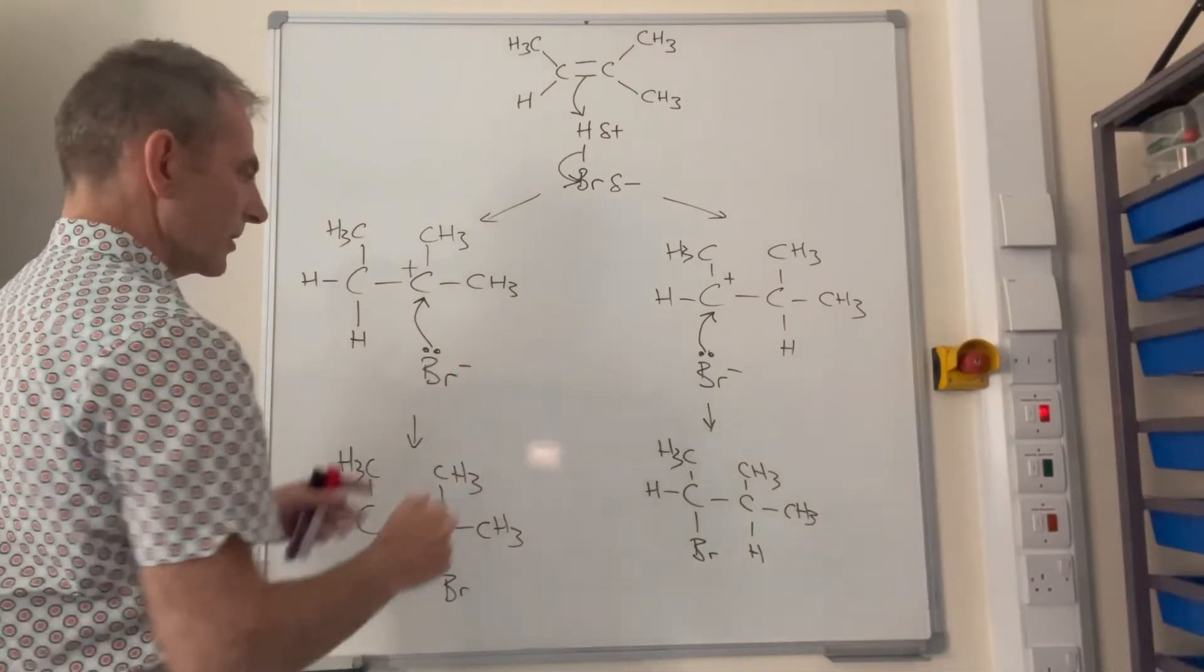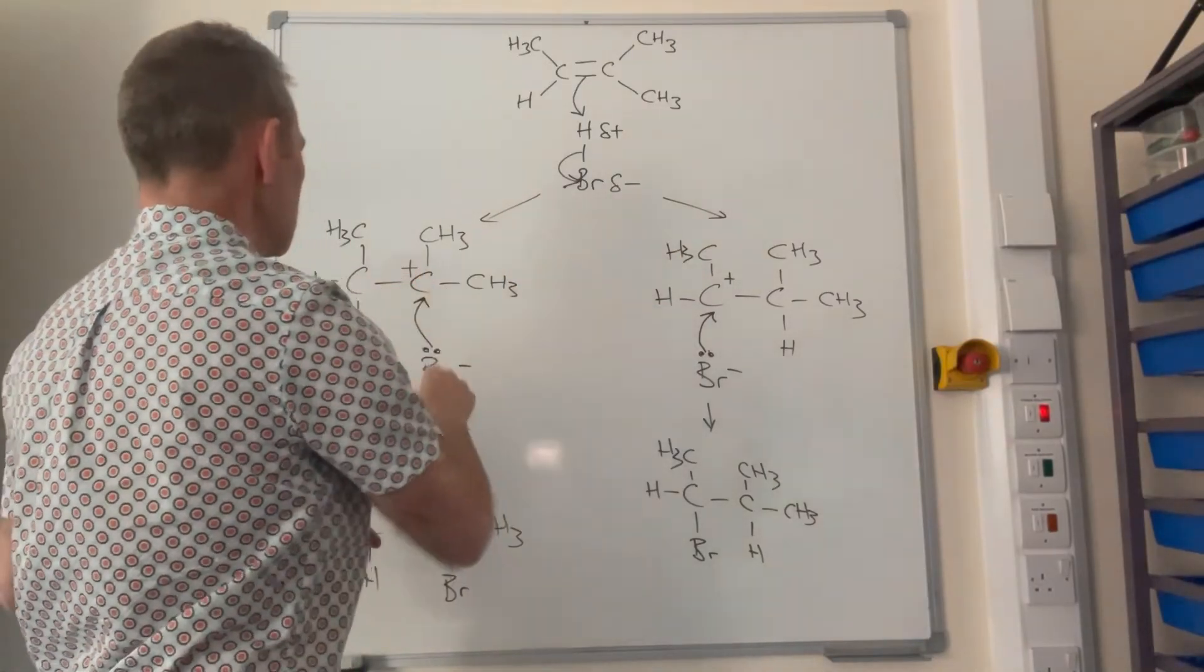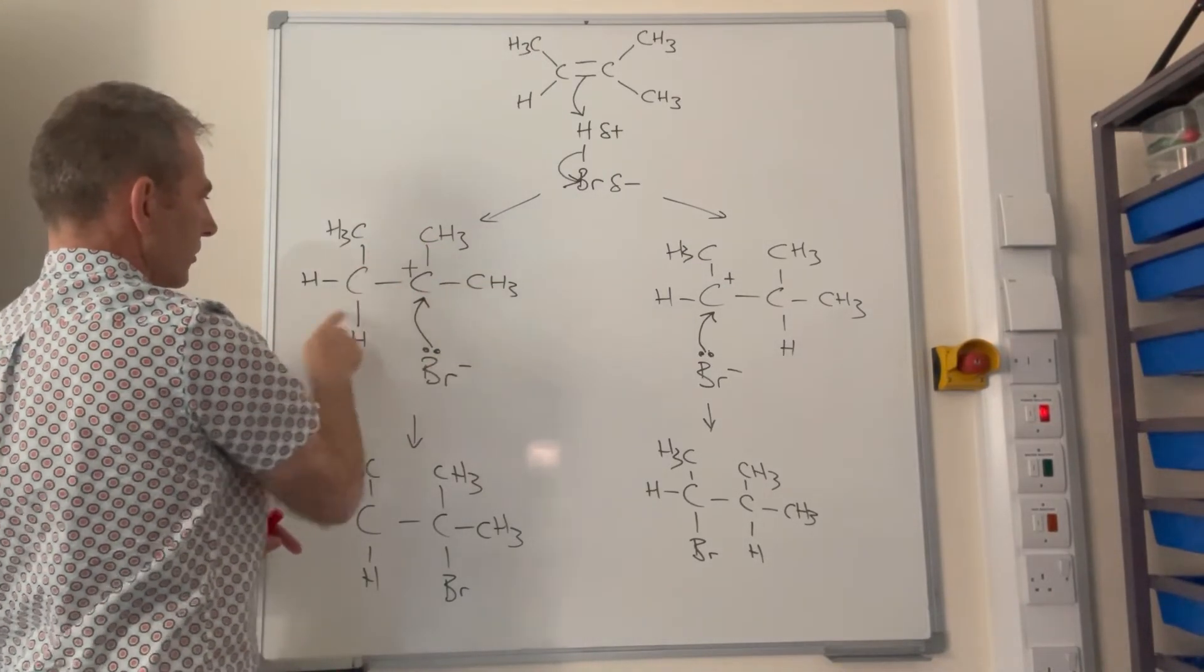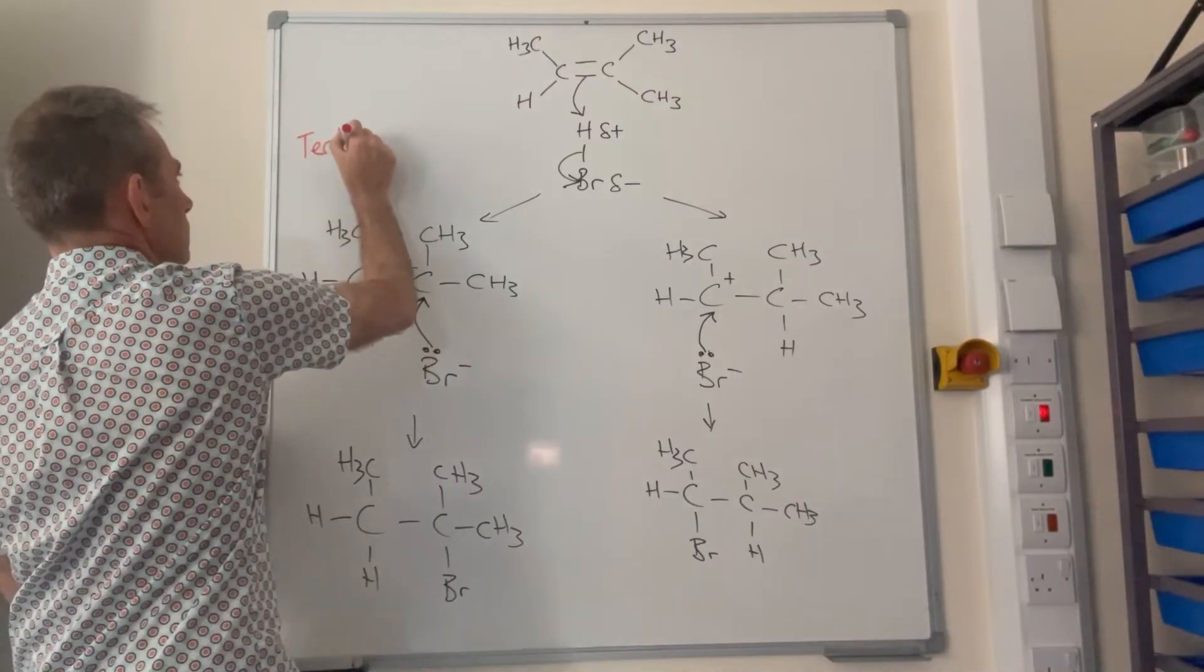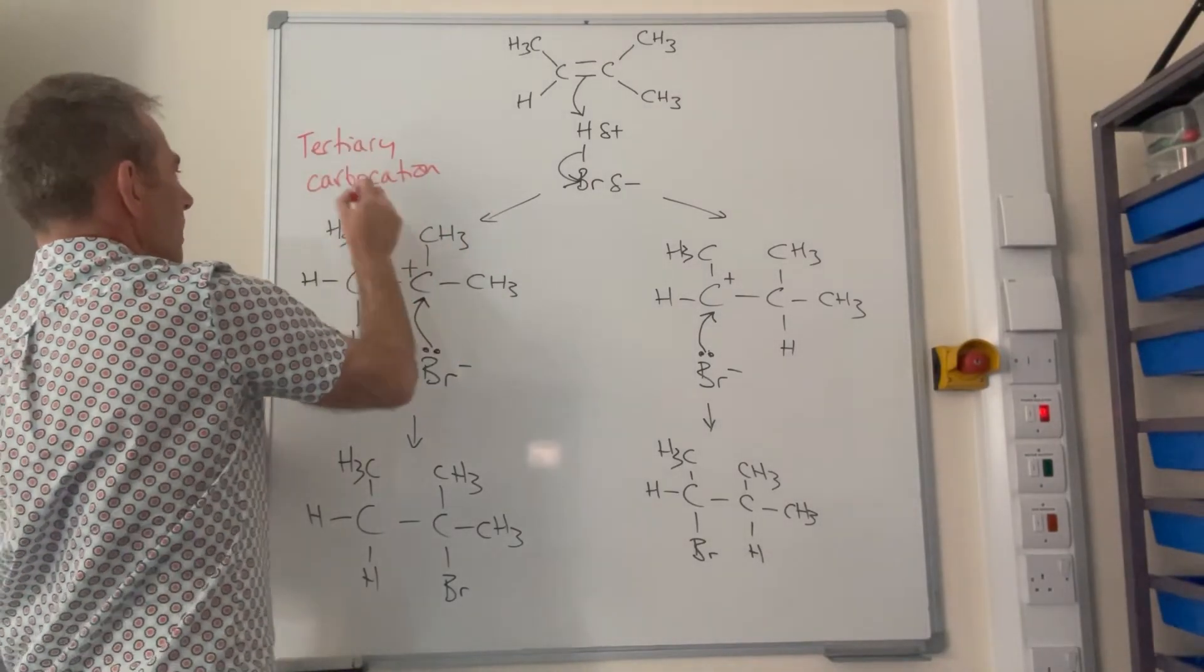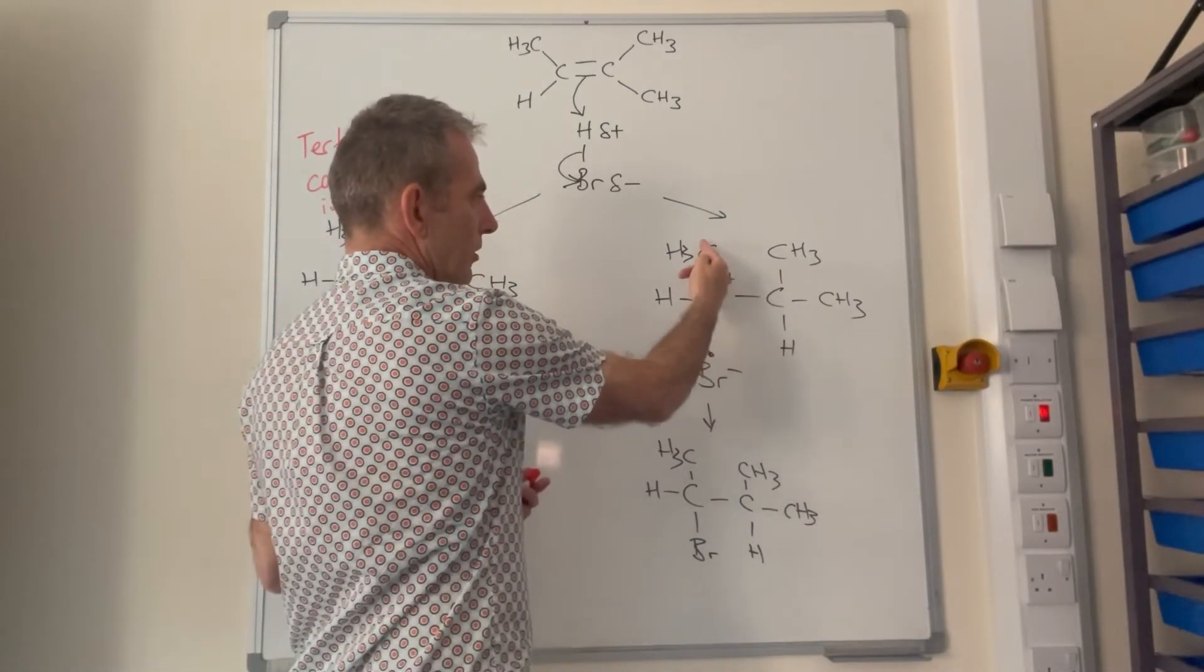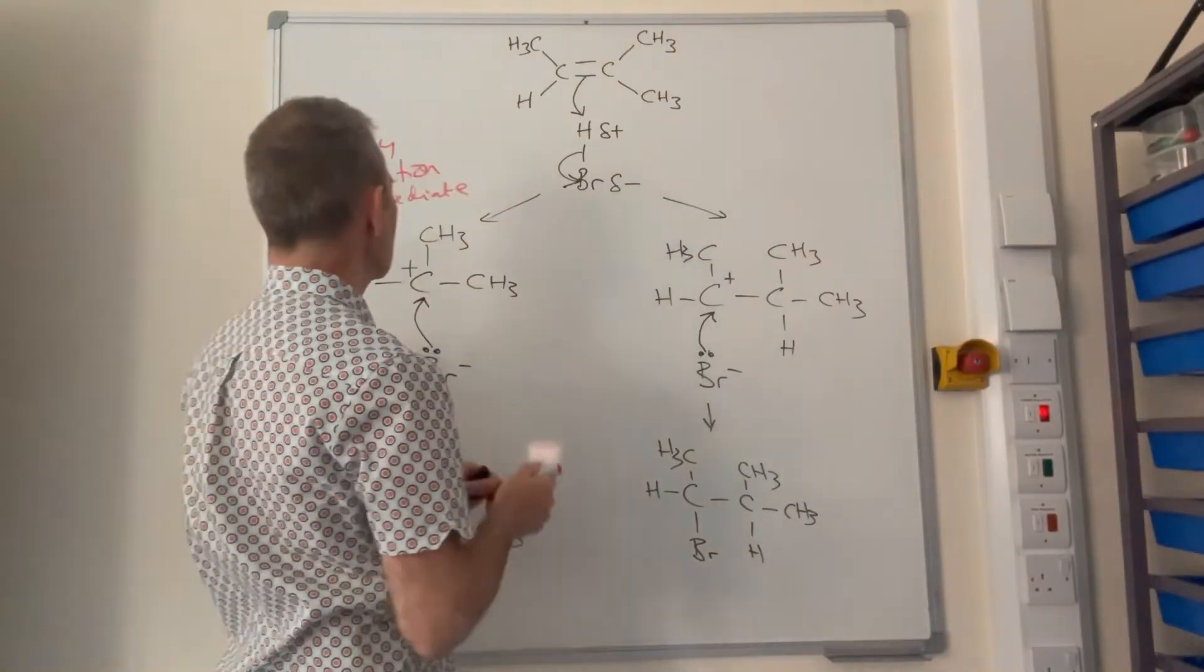So how do we explain which one's formed more than the other? It's to do with the type of carbocations we've got here. So we'll start with this left hand one. So what we need to be doing is looking at how many carbon groups are bonded to the carbon with the positive charge. So you can see we've got one, two, three. So we'll call this a carbon group. So this is a tertiary carbocation, or you could say tertiary carbocation intermediate. So if we have a look at the other one, so again look at the carbon with the positive charge on, we've got one carbon group, that one there, and this is a carbon group here. So it's got two carbon groups, so this is a secondary carbocation intermediate.